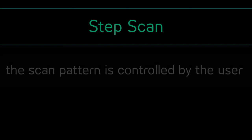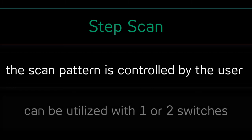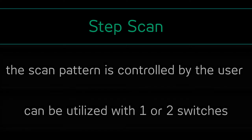The second general scan type category is step scan. With this scan type, the progression of the scan indicator is controlled by the user. This scan can be utilized with a single switch or two switches. The switches are used to progress the scan and make selections.